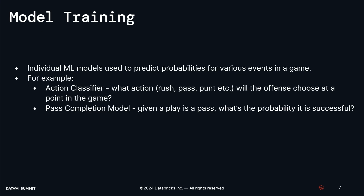We have our features and all the data points we care about. Now, what about model training? When building machine learning models, one of the first questions is: what's the structure of these models and what are they going to predict? In our case, we use individual machine learning models to predict probabilities of various decision points in a game. For example, the action classifier predicts what action the offense is going to choose at the start of a play — are they going to pass, rush, punt, et cetera? The pass completion model then says, given a play was a pass, what's the probability it's successful? We'll show how those models are combined in the next slide.